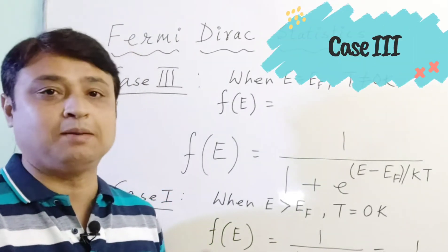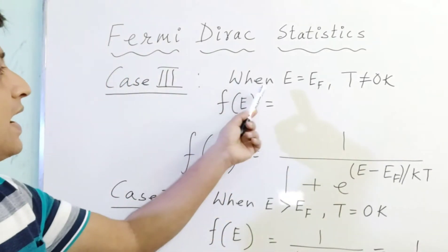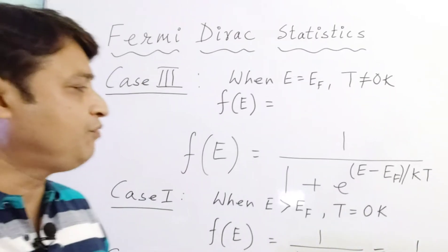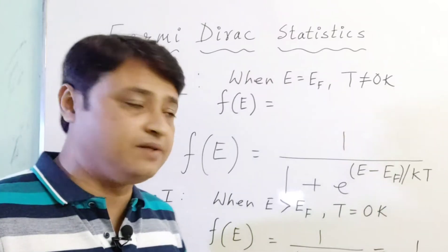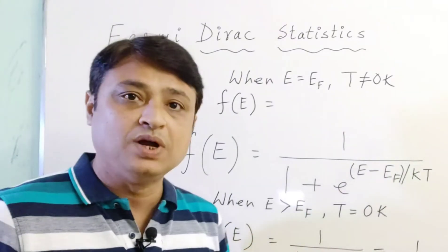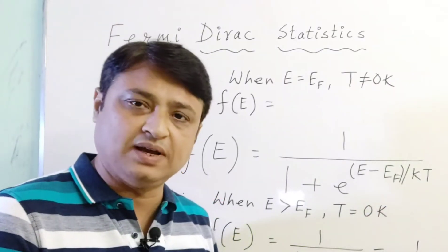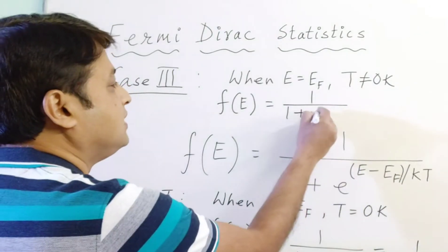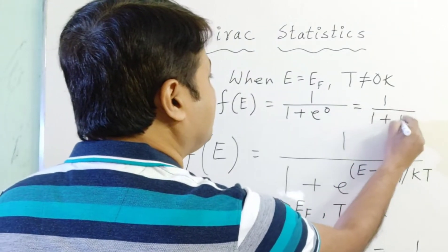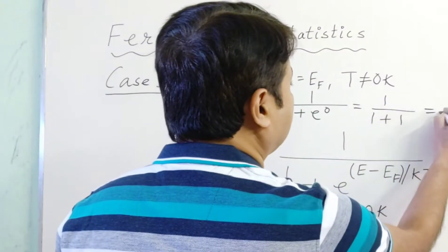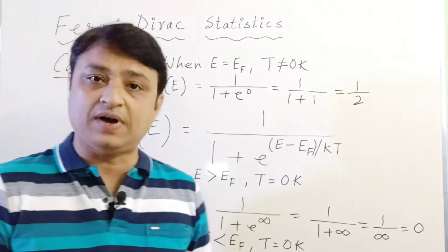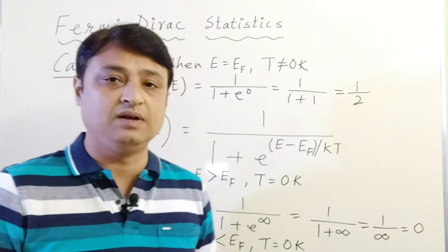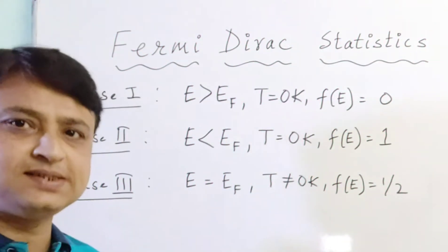Case 3 is very important both mathematically and physically. Here we consider E = Ef, but T is not equal to zero Kelvin — because if T = 0 and E = Ef, the fraction becomes 0/0, which is undefined. So with E = Ef at T ≠ 0K, the exponent (E − Ef)/kT = 0, giving e^0 = 1. Therefore f(E) = 1 / (1 + 1) = 1/2.